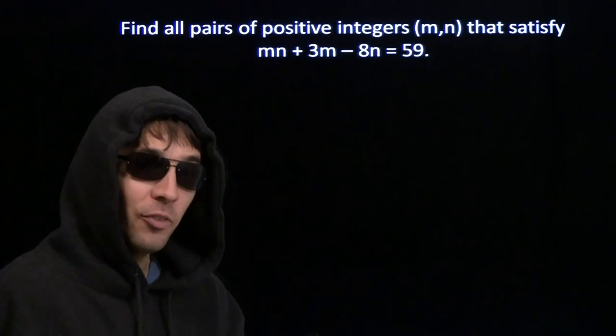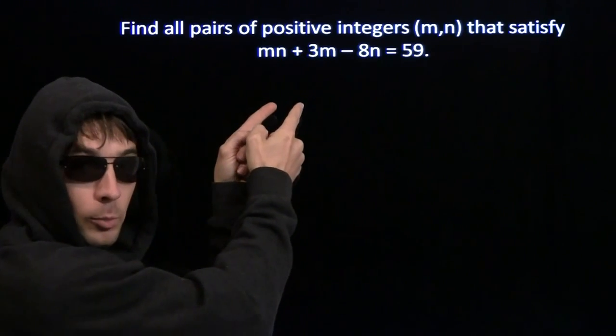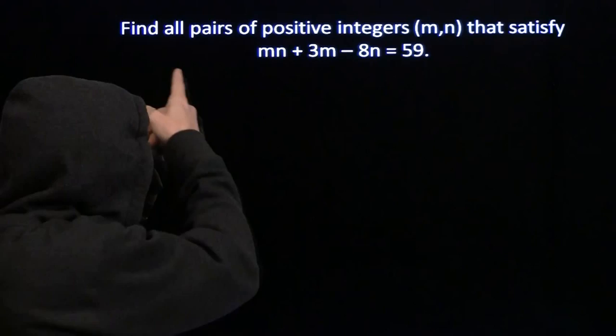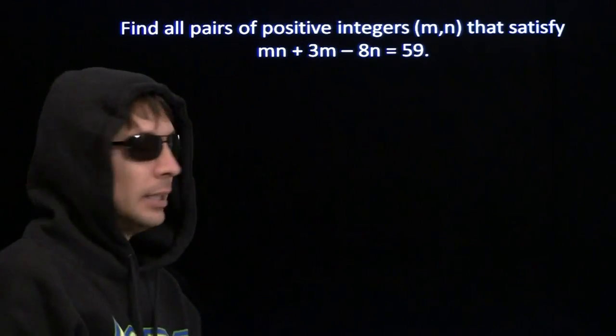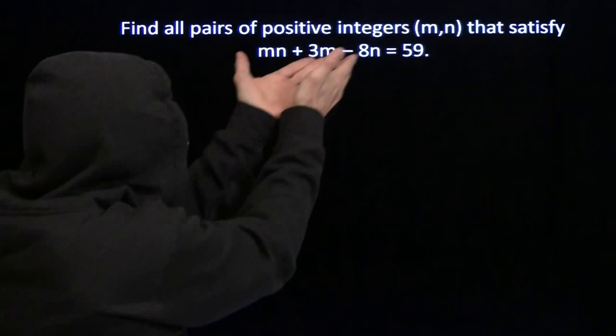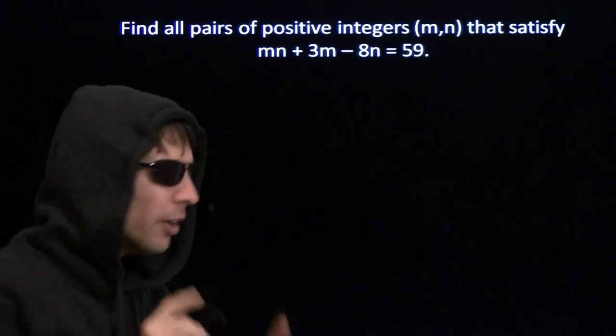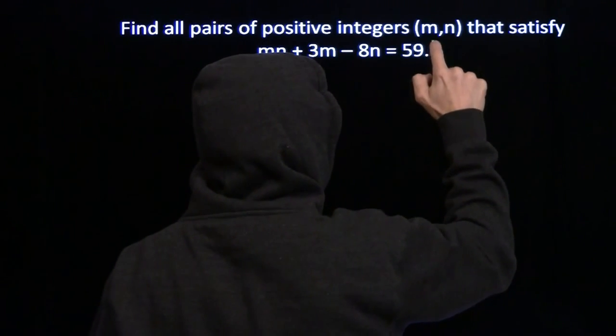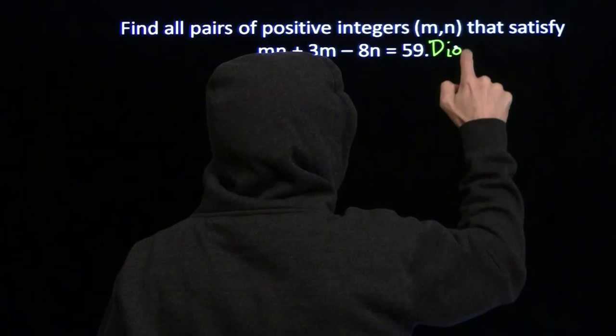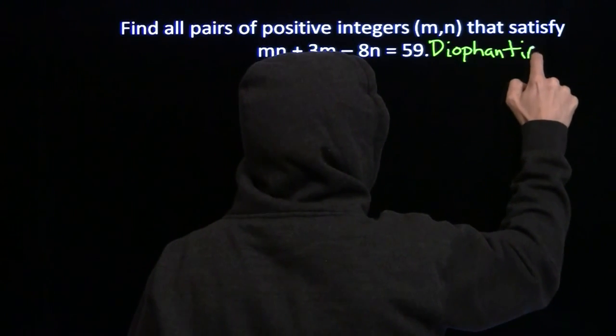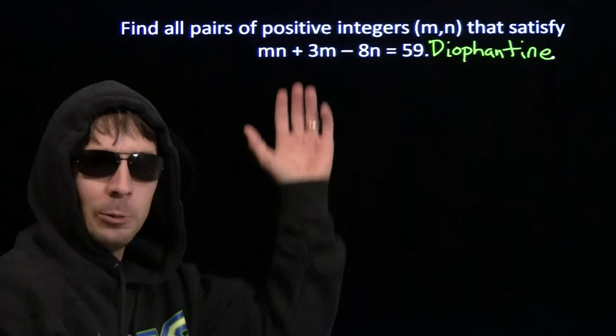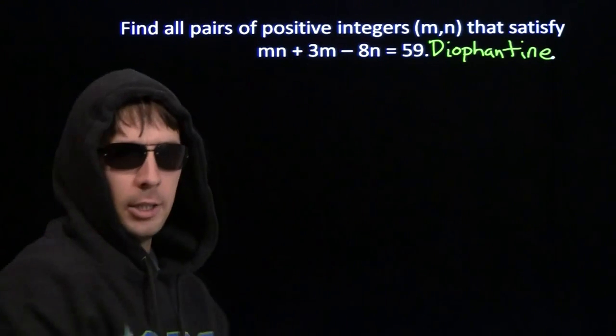Now, I'm going to teach you his favorite factoring trick with this problem right here. We're trying to find all pairs of positive integers that satisfy this equation. And this bit about trying to only find integers that satisfy this equation, very important, even has a special name. We call equations like this Diophantine equations. It's just a big fancy word that says we're only looking for integer solutions.